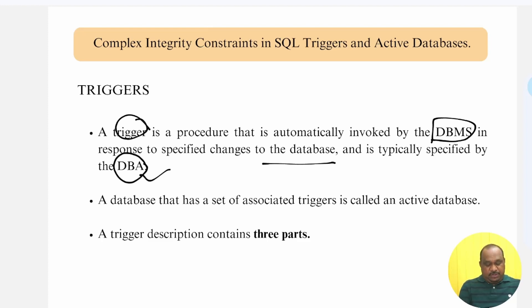The database that has a set of associated triggers is called active database. Whenever a database administrator will write the trigger, that will directly goes to the database to perform something.